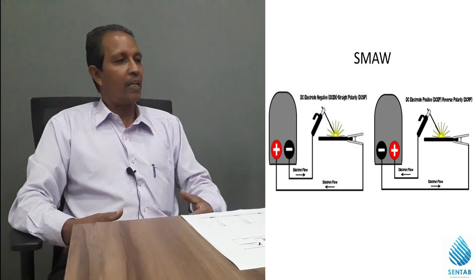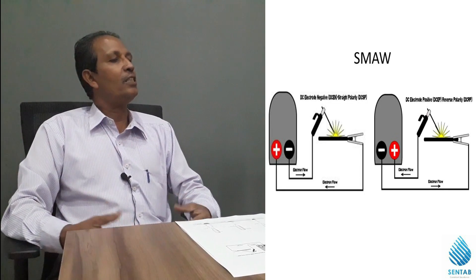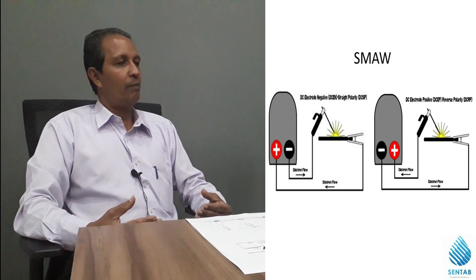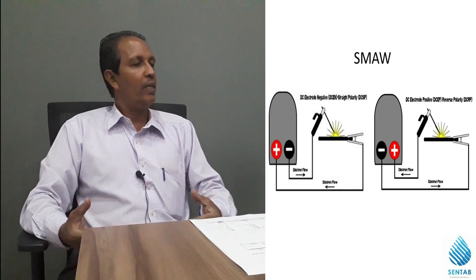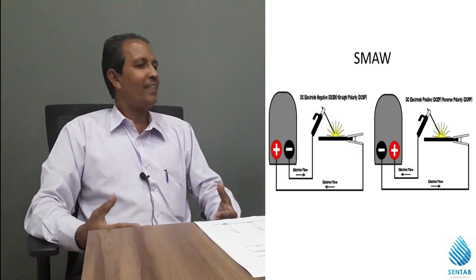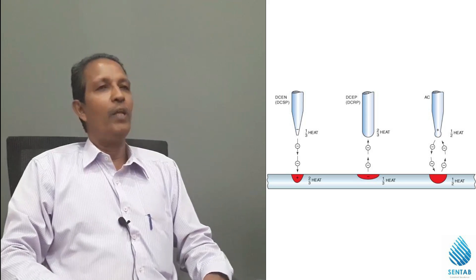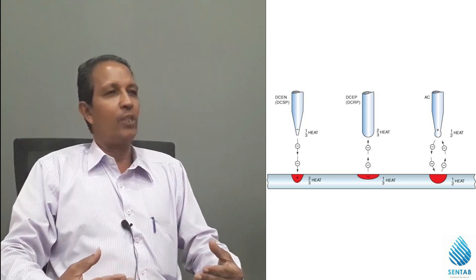What do you use — DC EN or DC EP? DCEN is called direct current electrode negative. DCEP is called direct current electrode positive. These are also called DCSP and DCRP.